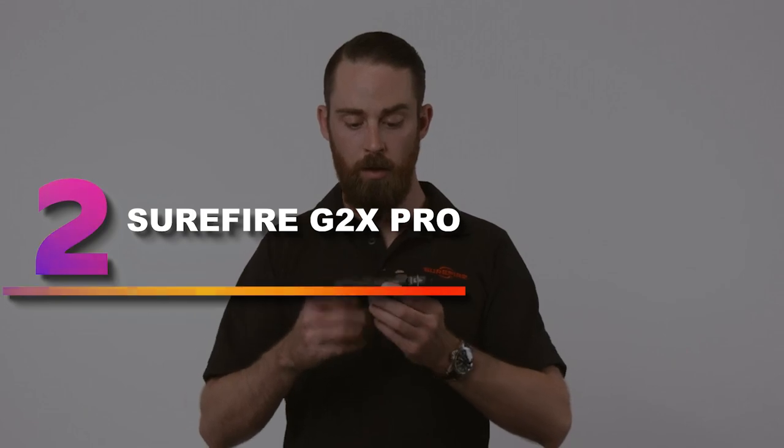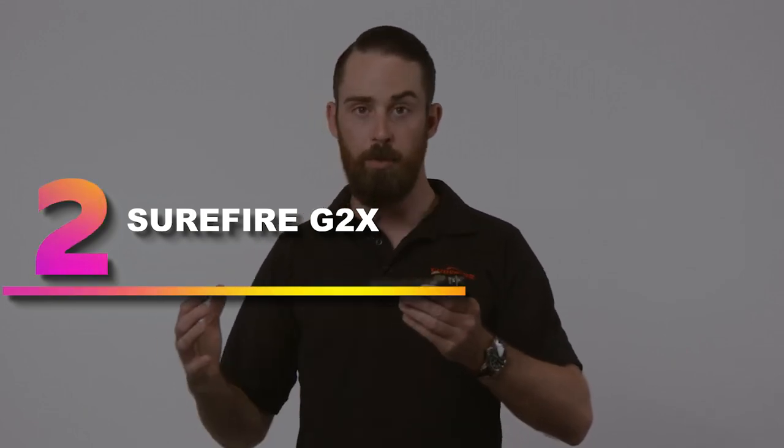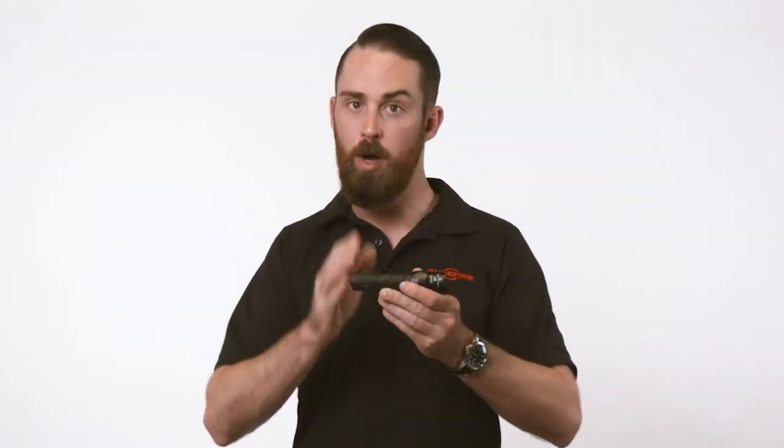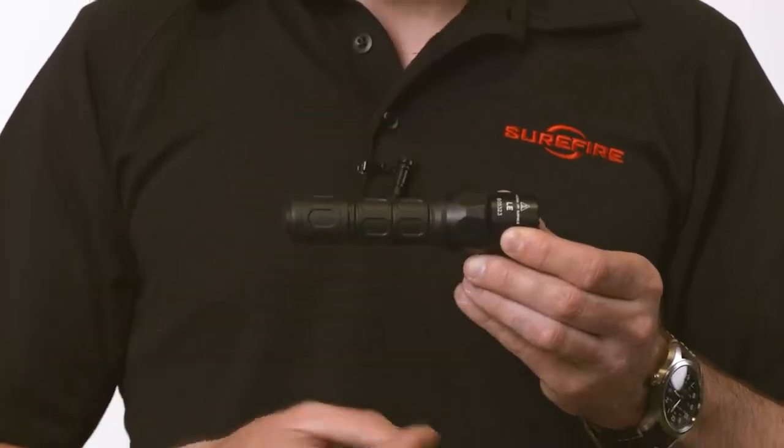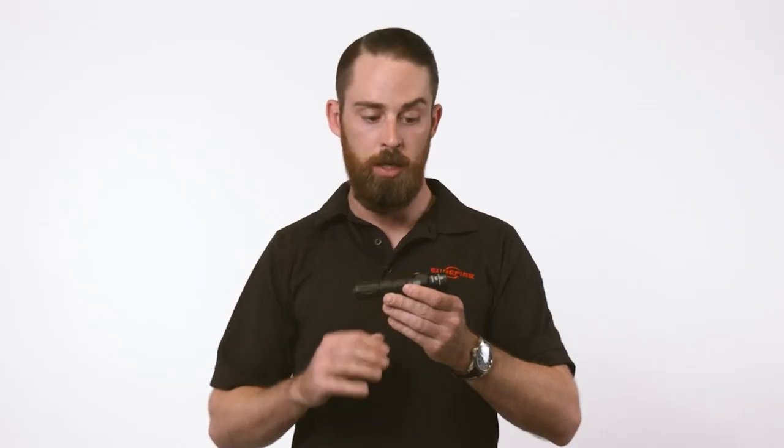Number 2: Surefire G2X Pro. This list would be incomplete if I left out the Surefire G2X Pro. It's a top option among hunters and outdoorsmen and is one of the most widely used flashlights in the hunting industry. It's a great all-around torch at an approachable price. For starters, it's available in four colors, giving hunters the option to choose a light that'll match their specific kit.